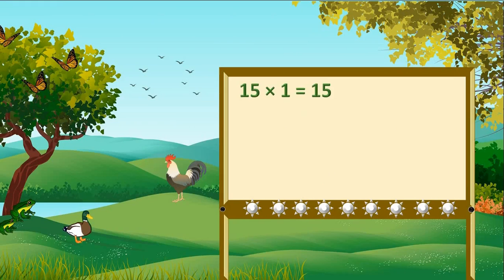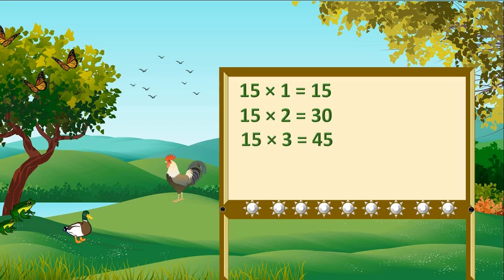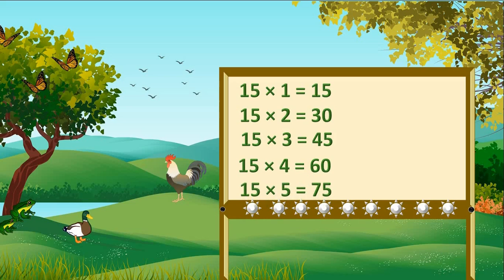15 1s are 15. 15 2s are 30. 15 3s are 45. 15 4s are 60. 15 5s are 75.